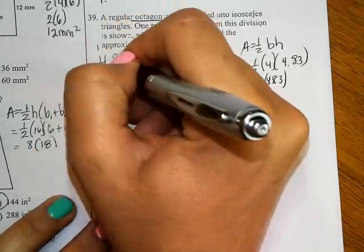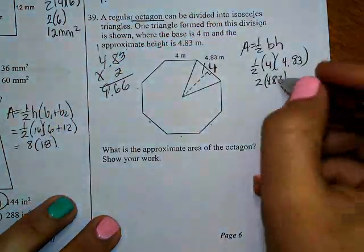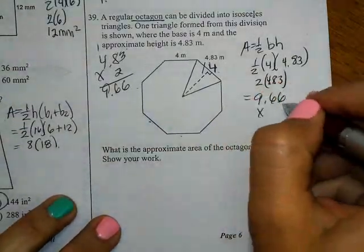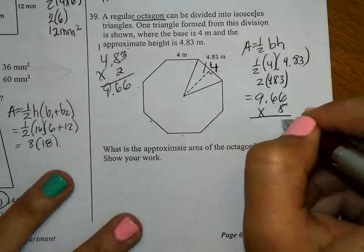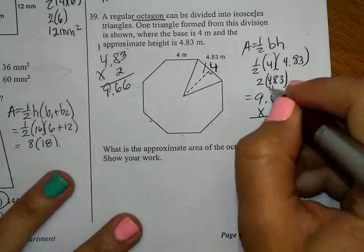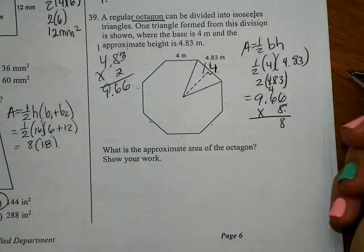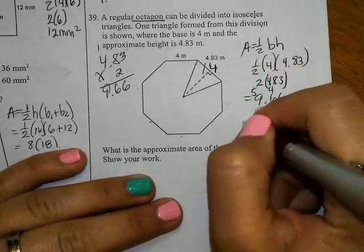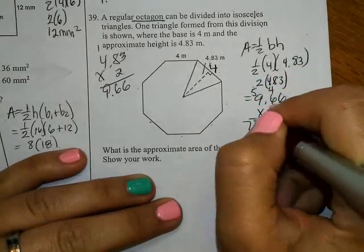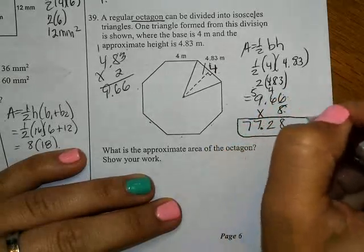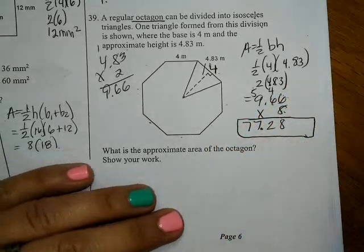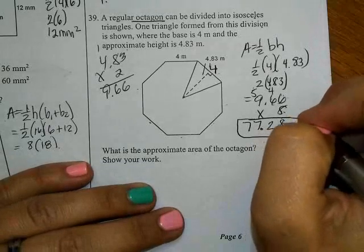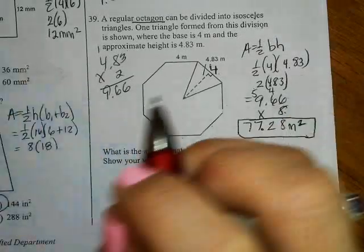But I'm not done since there's 8 triangles. Working through 9.66 times 8: 48, 48 plus 4 is 52, 72 plus 5 is 77. Move the decimal twice. This makes the area of my octagon 77.28 meters squared.